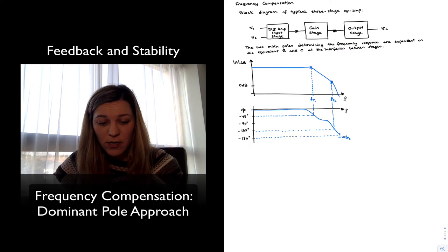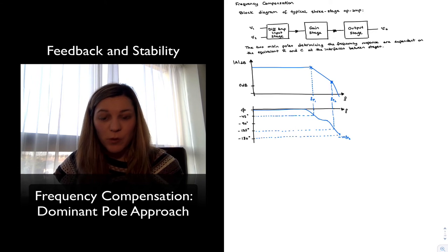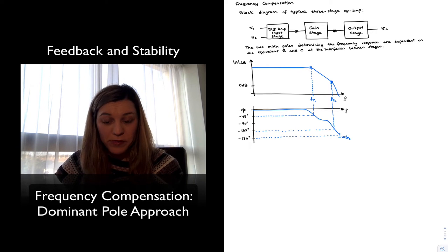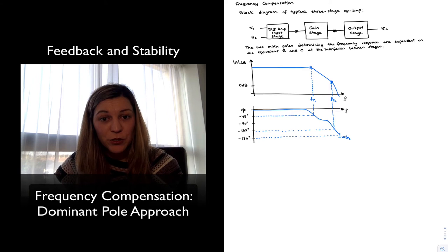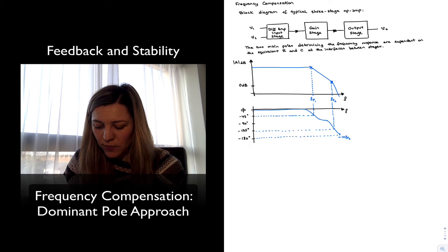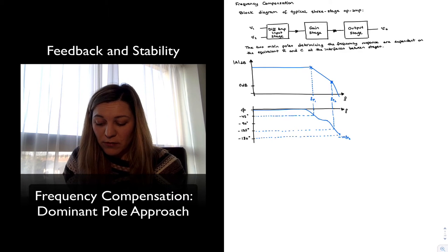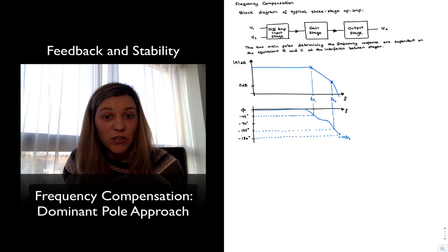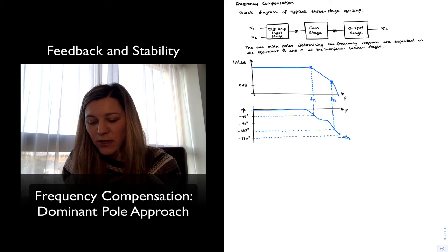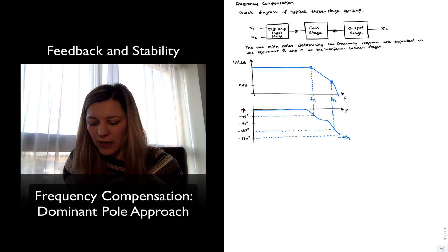I have drawn a generic frequency response for a three-stage op-amp system in terms of the magnitude response, with the two dominant poles FP1 and FP2. The gain will be relatively constant up until hitting the first pole, which determines the high cutoff frequency. Then the gain starts to decrease until it hits the second pole, and then decreases at a higher rate.